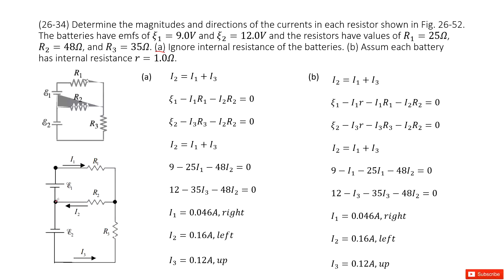First, we look at this point. For this point, you can see the current I2 flows in, and the current I1 and I3 flow out at this point. The current is conserved. Then we can write the equation I2 equal to I1 plus I3.